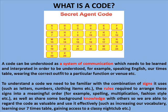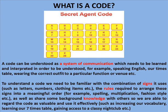So what is a code? A code can be understood as a system of communication which needs to be learned and interpreted in order to be understood. For example, speaking English, our times table, wearing the correct outfit to a particular function or venue.